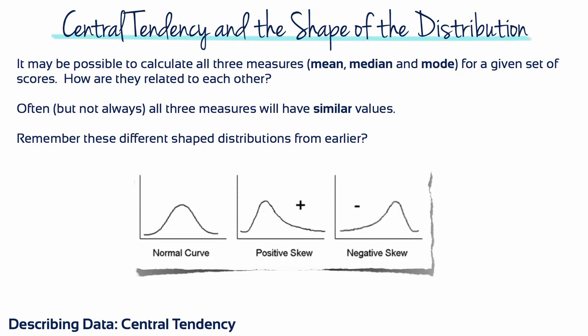We have identified three different measures of central tendency, and often a researcher calculates all three for a single set of data. Because the mean, the median and the mode are all trying to measure the same thing, central tendency, it's reasonable to expect that these three values should be related. In fact, there are some consistent and predictable relationships among the three measures of central tendency.